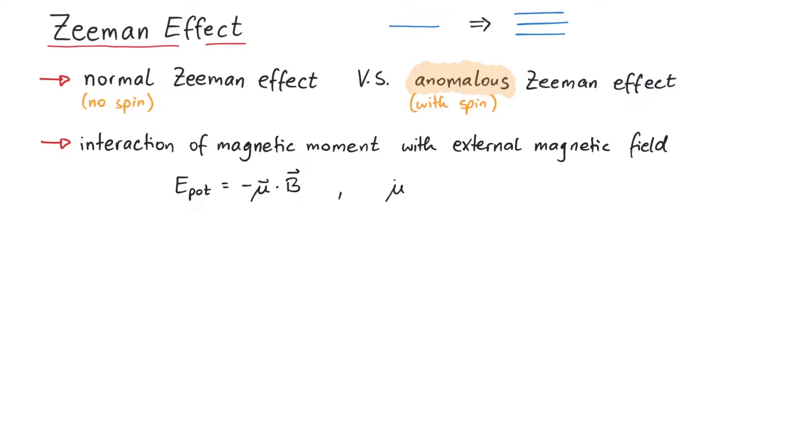This magnetic moment can be written in terms of a g-factor, a magneton, and an angular momentum. This magneton depends on the charge and the mass for the specific particle. In case of an electron, this is the Bohr magneton.